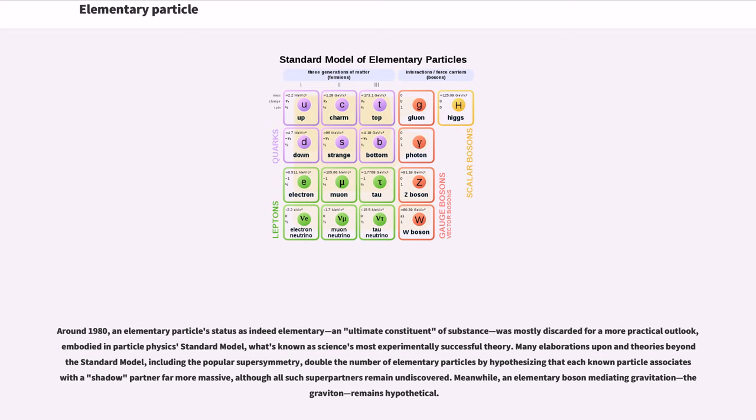Around 1980, an elementary particle's status as indeed elementary, an ultimate constituent of substance, was mostly discarded for a more practical outlook, embodied in particle physics standard model, what's known as science's most experimentally successful theory.